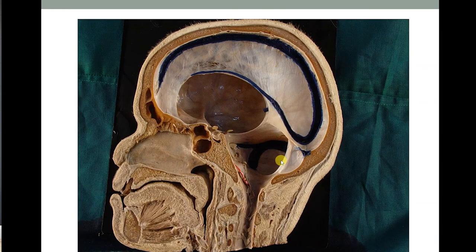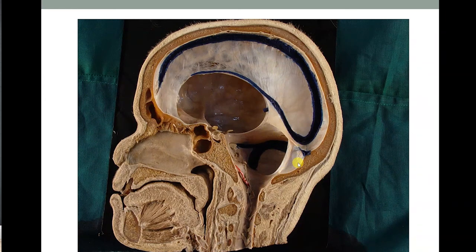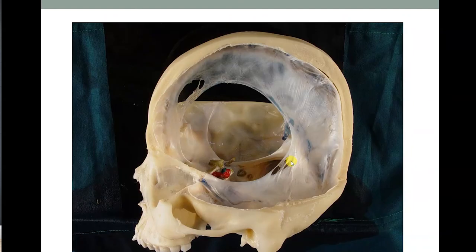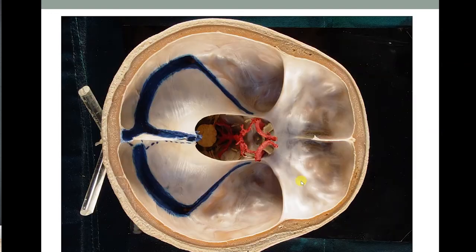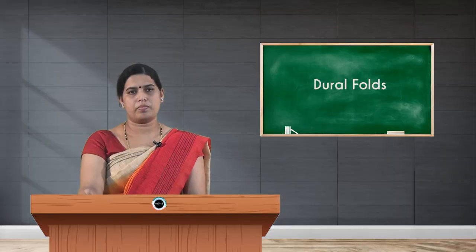This is a museum specimen showing the removal of the brain where you can clearly see the falx cerebri, tentorium cerebelli, and falx cerebelli — the intact dural folds. From the superior view you can clearly see the tentorium cerebelli with the tentorial notch, portions of the brain stem, circle of Willis, transverse sinus, and superior petrosal sinus. Thank you.